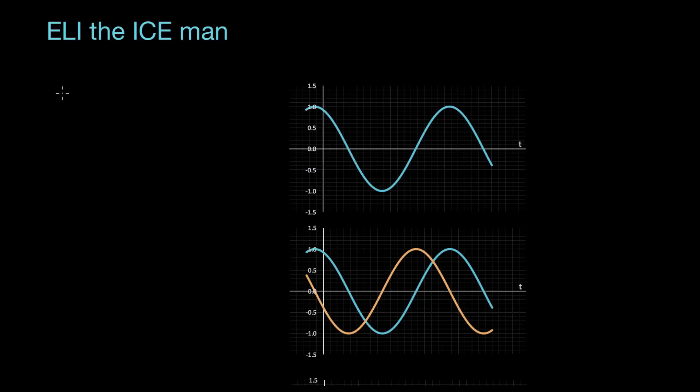Eli the Iceman is a friend of every electrical engineer. And what we've been talking about is AC analysis. In AC analysis, we limit ourselves to one type of signal, and that's a sinusoid. And the sinusoid we like is called cosine.